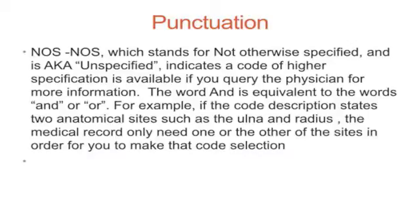The word AND in a code description is equivalent to the words 'and' or 'or.' For example, if the code description states two anatomical sites such as the ulna and radius, the medical record only needs one or the other of the sites in order to make that code selection.